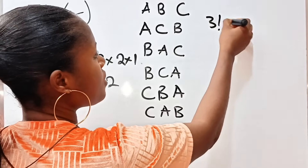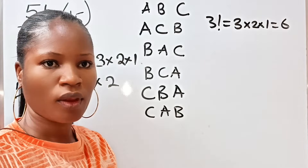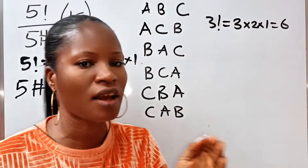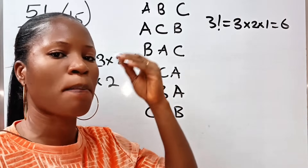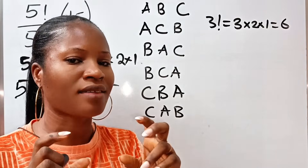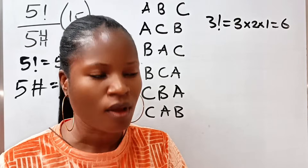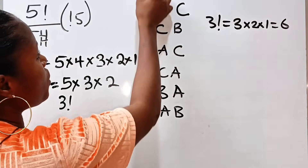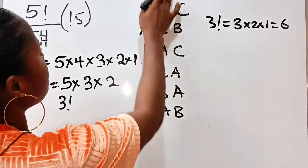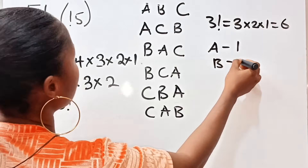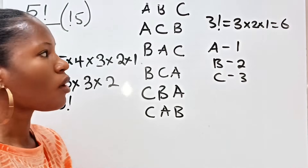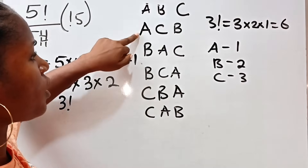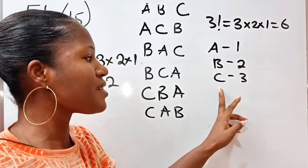This is what factorial represents — 3 factorial is equal to 3 times 2 times 1, which equals 6. But in this case, we have a sub-factorial. This sub-factorial is telling us how many ways we can arrange a particular number of items such that none of those items retains its original position. In the original arrangement, A takes the first position, B takes the second, and C takes the third.